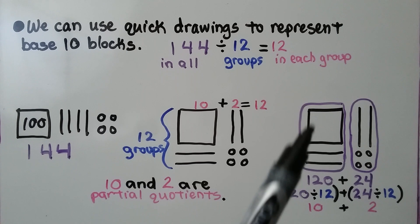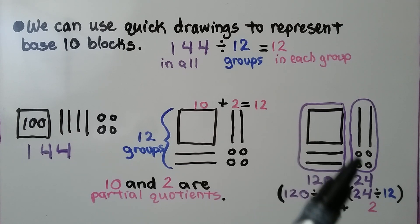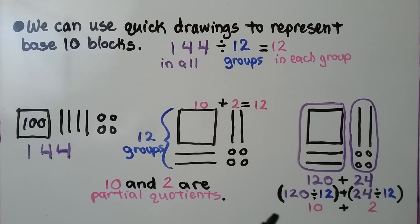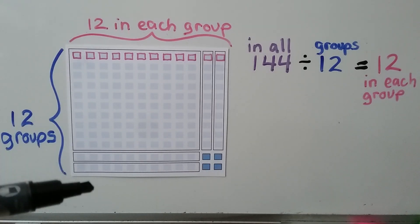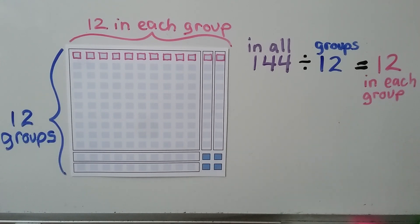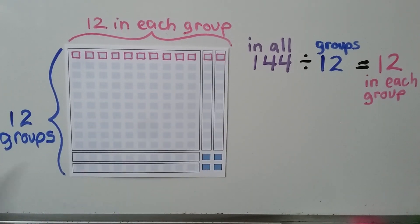What we're doing is we have 100 and two tens — that's 120. And we have 10, 20, and 4 — that's 24. That makes 144. And 120 divided by the divisor 12 is 10, and 24 divided by the divisor is 2. The 10 and the 2 are our partial quotients. We had 12 groups — 10 and 2 more — that makes 12 in each group. For those who have multiplication facts memorized, 12 times 12 is equal to 144.